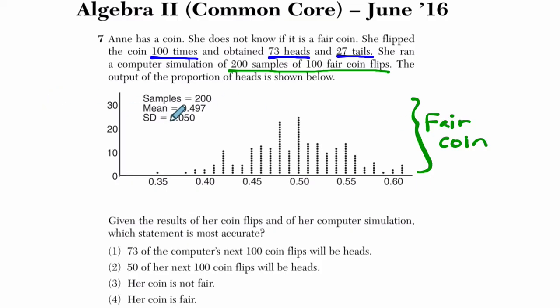And you can see that there are 200 samples. The mean is about 0.497, about 0.5, which you'd expect on a coin. The standard deviation is 0.05. So 0.05 above and 0.05 below captures a really large portion of the data.